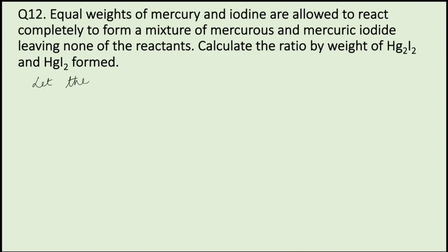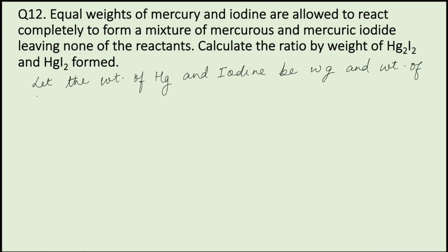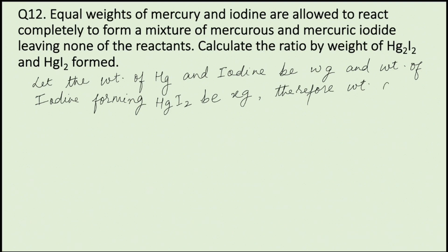Let the weight of mercury and iodine be W grams. Let the weight of iodine forming HgI₂ be x grams. Therefore, the weight of iodine forming Hg₂I₂ will be W minus x grams.